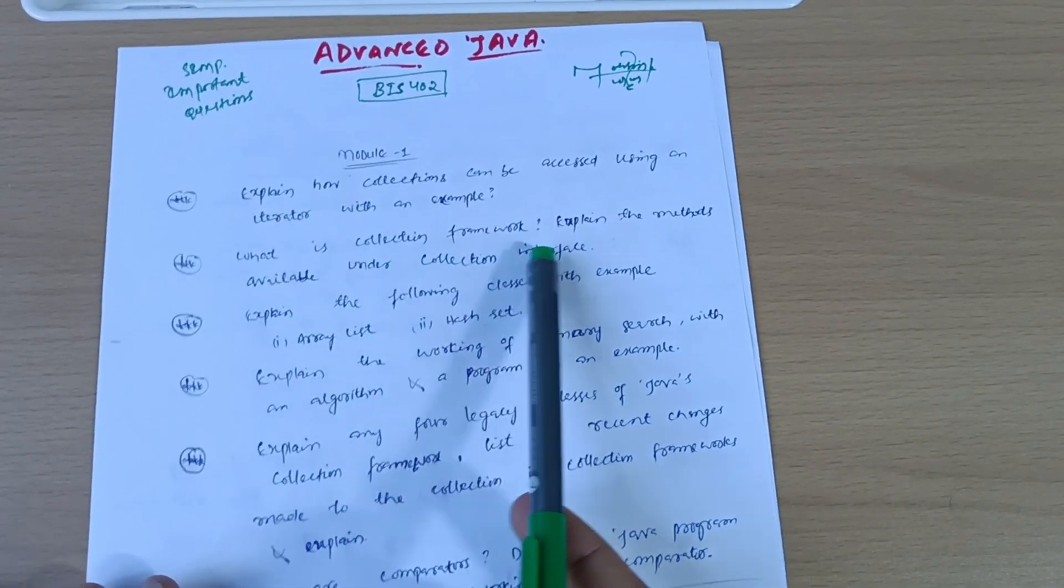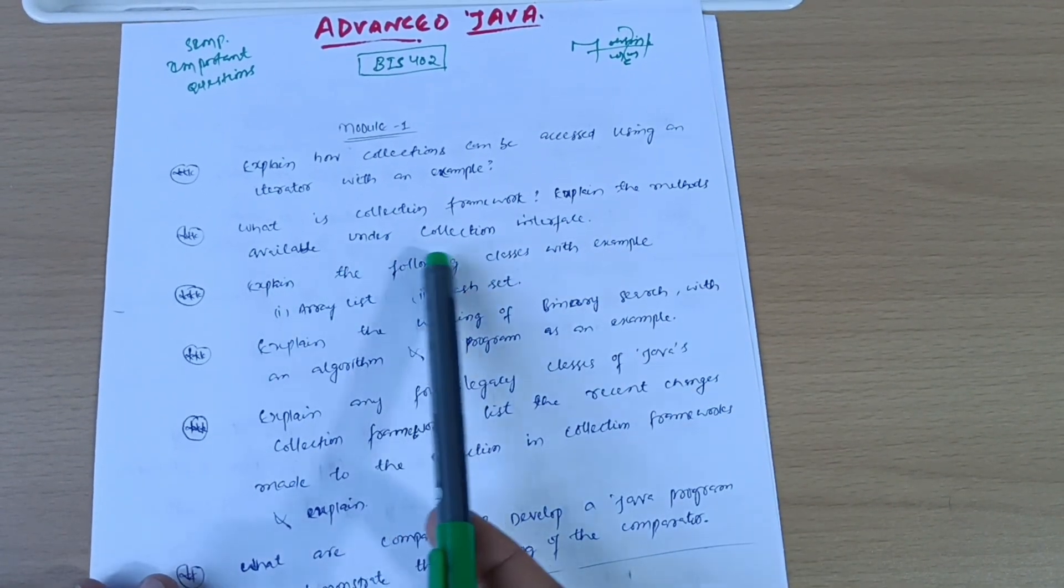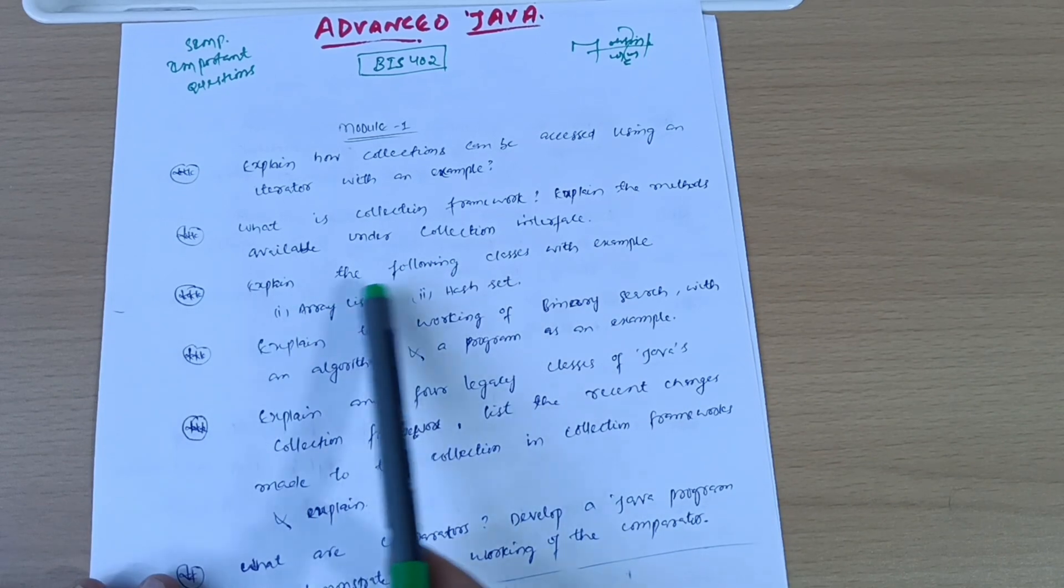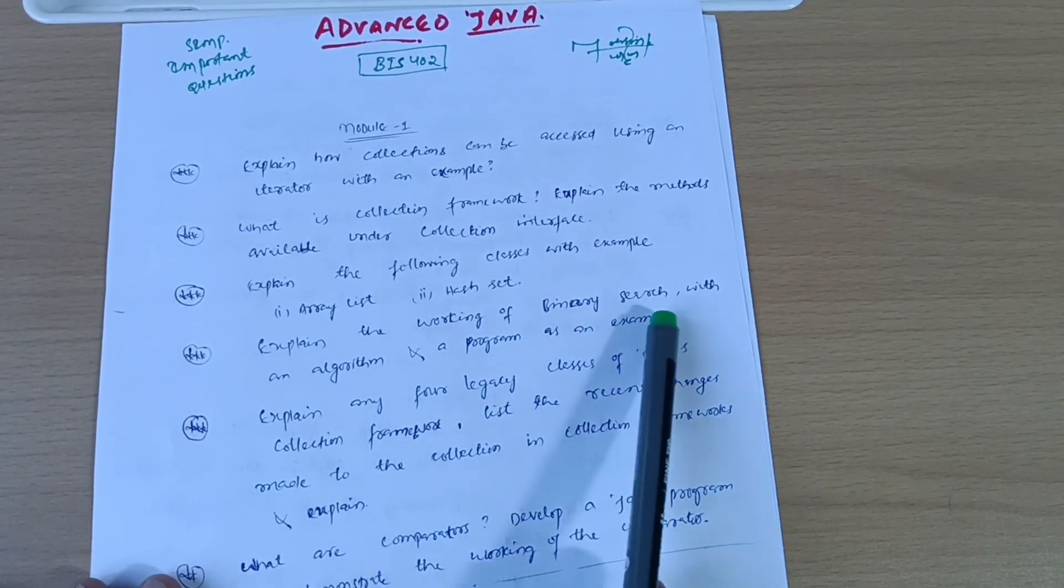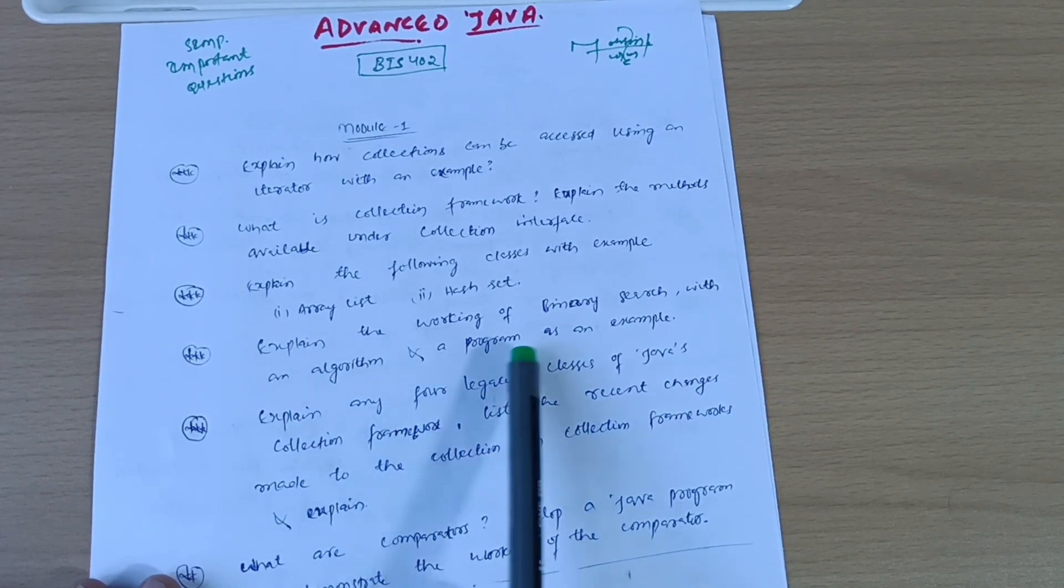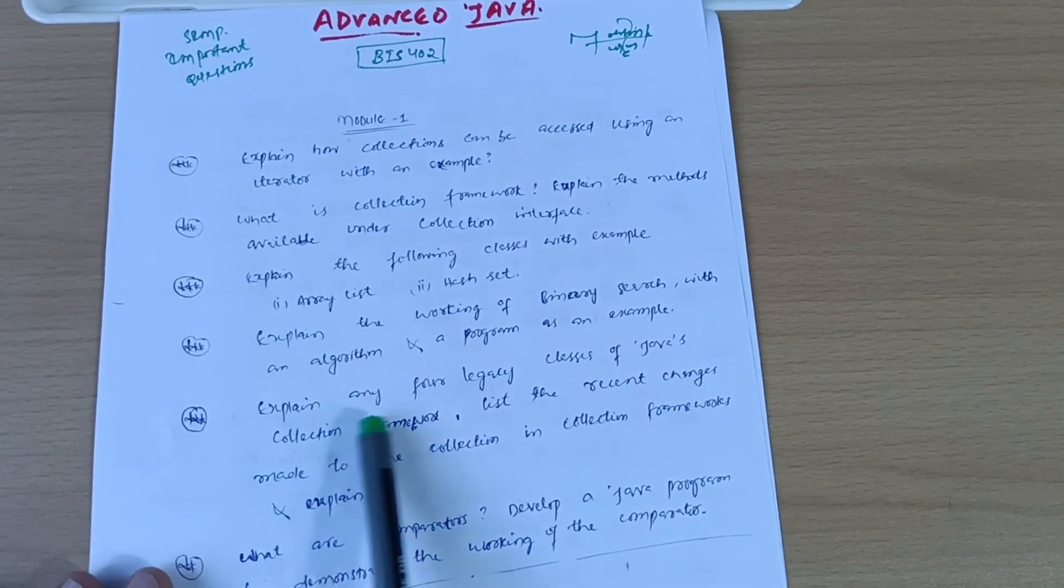What is collection framework? Expand the methods available under collection interface. Expand the following classes with example: ArrayList and HashSet. Expand the working of binary search with an algorithm and a program as an example.